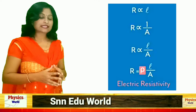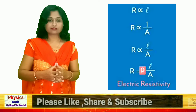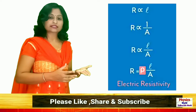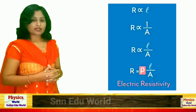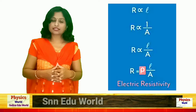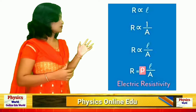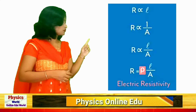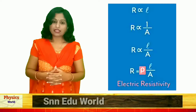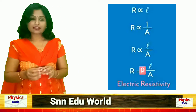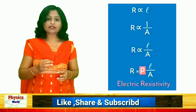Combining both factors, we can say that R is proportional to L divided by A. When we remove the proportionality sign, we introduce a constant, so R equals rho times L over A. The symbol rho looks like a curvy P — it is the Greek letter rho.